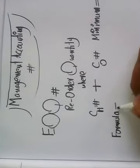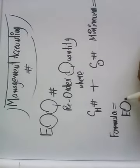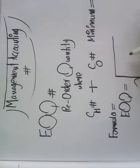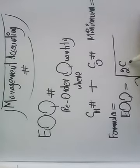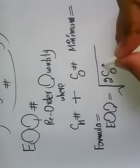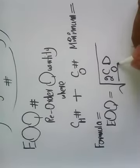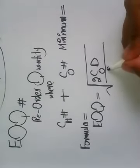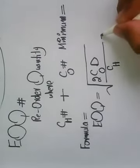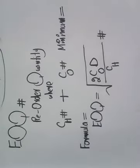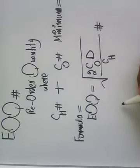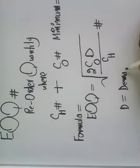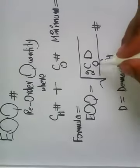The formula is: Economic Order Quantity is equal to root 2 C not, C not cost per order, D demand for the year, and cost of holding C of H, which is cost of holding.